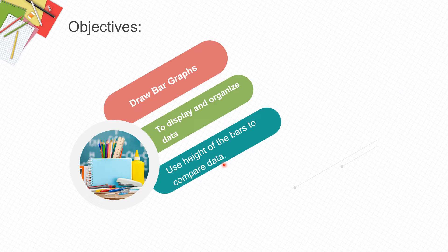We will learn about bar graphs in today's lesson, and we can connect it with the previous lesson where we displayed and organized data in tables, and then plotted the data on number lines. The number with more circles or dots told us that item is more in quantity. In today's lesson, we will compare the bars — the long bar tells us an item is more in quantity and the short bar tells us it is less.